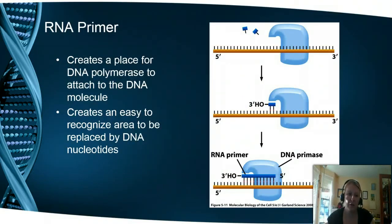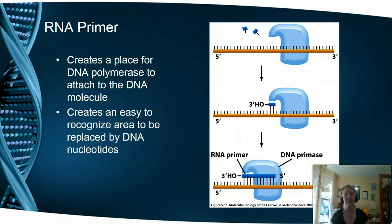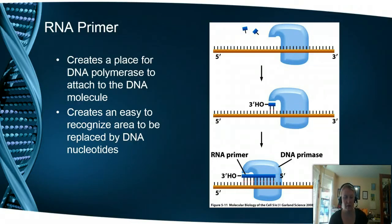DNA polymerase can't just latch onto DNA — it's incapable of doing that, so it has to have an RNA primer put into place. We use an enzyme called RNA primase for this. The picture says DNA primase, but that's just a nomenclature thing the textbook authors use — it's an RNA primer put on by the primase. The primer is kind of like a handhold in rock climbing that the polymerase can jump onto and move forward. The lagging strand will have a whole bunch of primers put down, whereas the leading strand only needs one to get started.